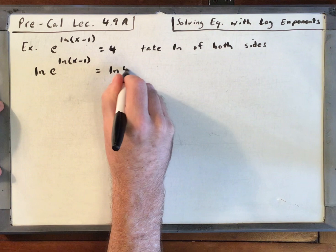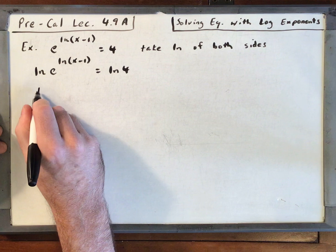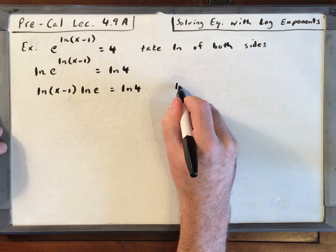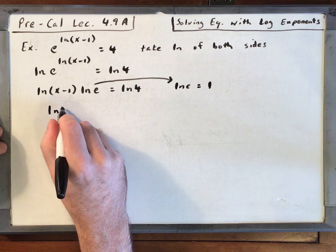Now I can bring that natural log of x minus 1 in front as a coefficient. Natural log of x minus 1 times the natural log of e is equal to the natural log of 4. Now natural log of e is just equal to 1, we talked about that in a different lecture. So then we can say natural log of x minus 1 equals natural log of 4.